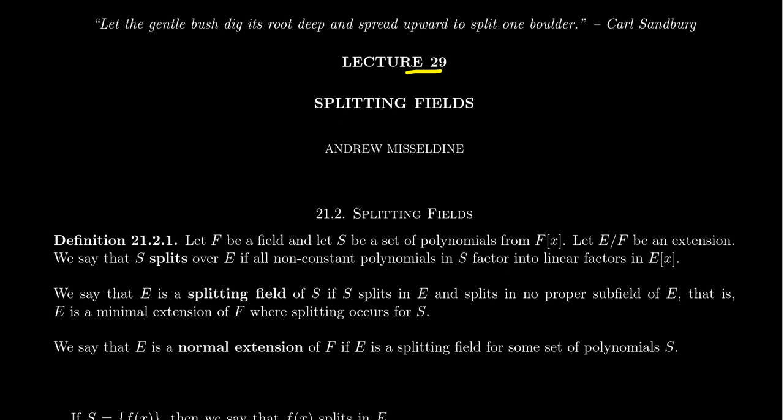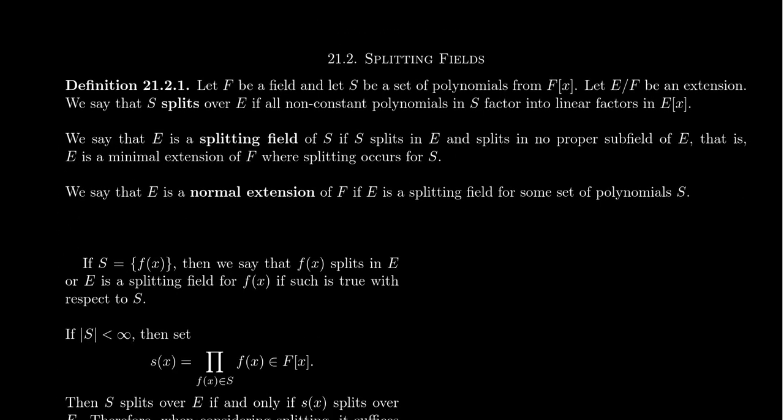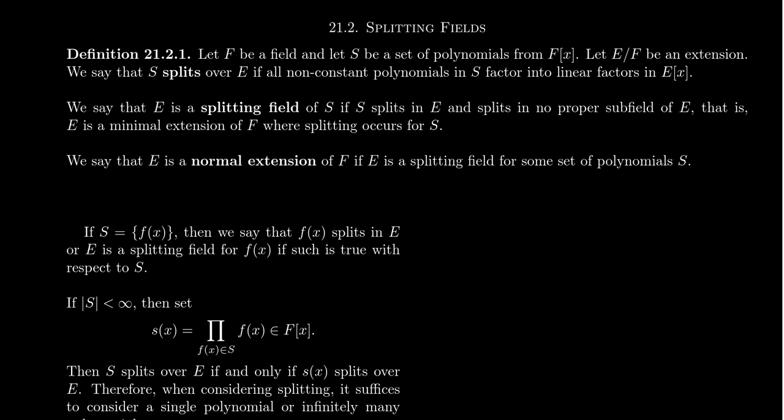In lecture 29, we want to talk about the titular topic of splitting fields. As we've discussed field extensions previously, we know by Kronecker's theorem that given any field and any irreducible polynomial over that field, we can always build a field extension that adds a root to that polynomial. The algebraic closure is essentially the union of all of these processes—taking all of the roots of every possible polynomial. This was a maximal algebraic extension that makes all polynomials split. Is there a minimal algebraic extension that makes certain polynomials split? That's what we mean by splitting field.